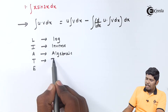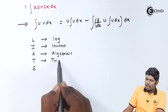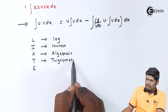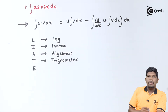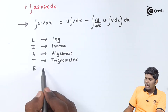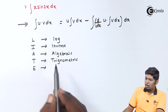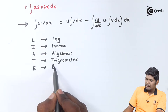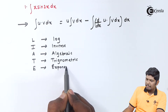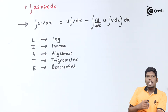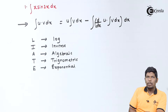T stands for trigonometric functions — functions in which we have sine, cos, tan and so on. E stands for exponential functions, meaning e raised to x or a raised to x, in which x is our power.